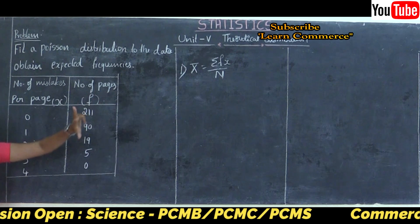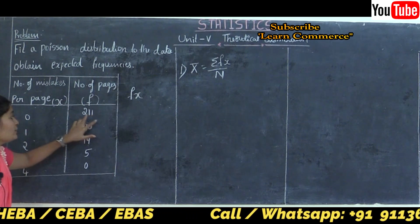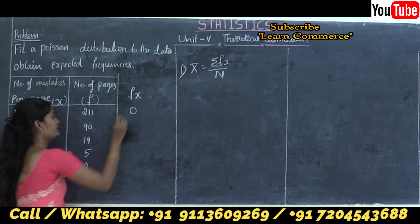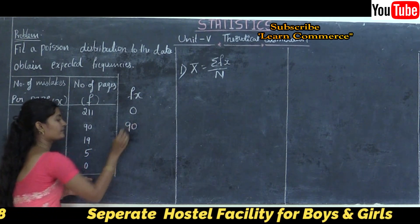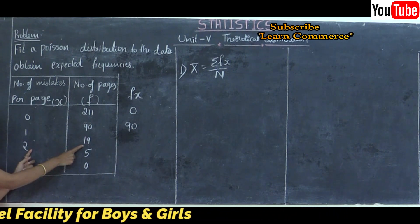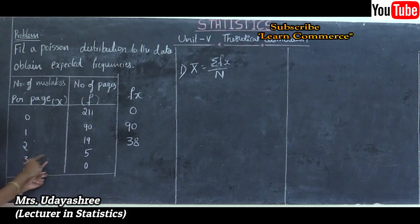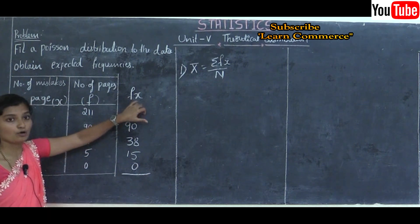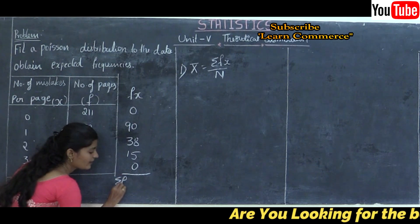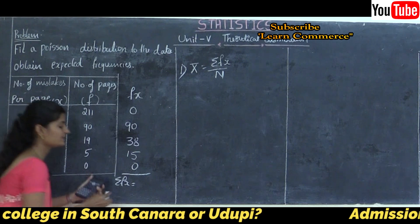We need to calculate the sum of FX, so we generate the FX column. X = 0, F = 211, so F×X = 0. X = 1, F = 90, so 1×90 = 90. X = 2, F = 19, so 2×19 = 38. X = 3, F = 5, so 3×5 = 15. X = 4, F = 0, so 4×0 = 0. The sum of FX = 0 + 90 + 38 + 15 + 0 = 143.